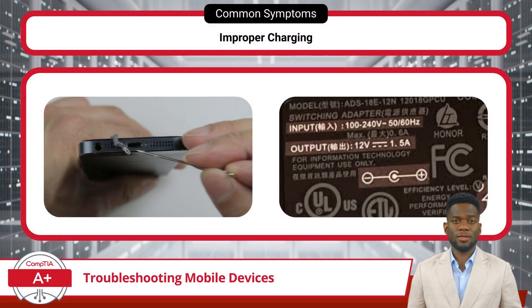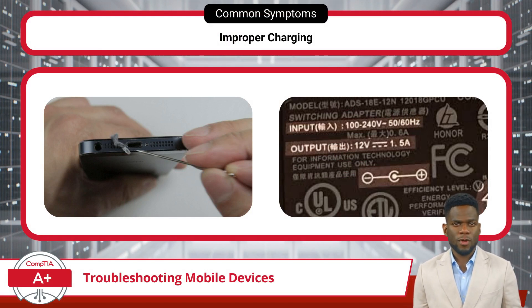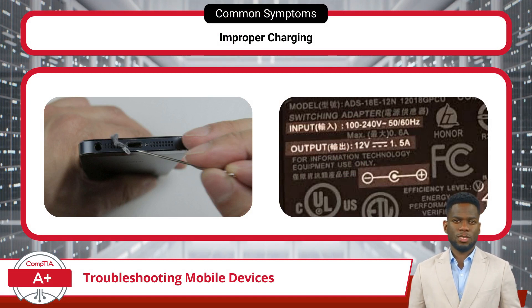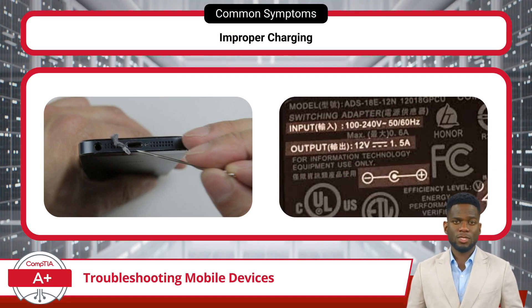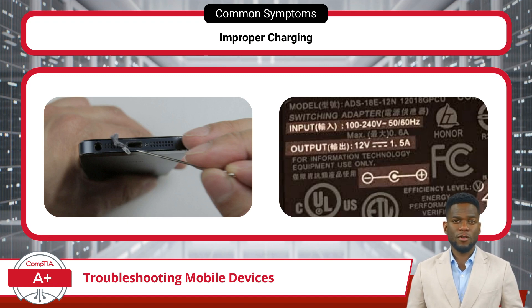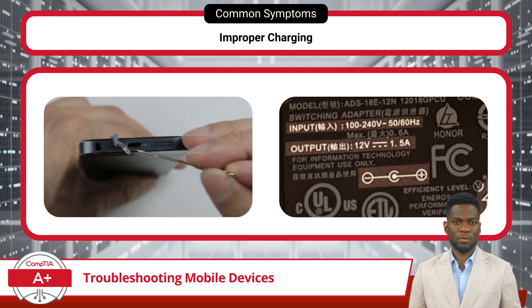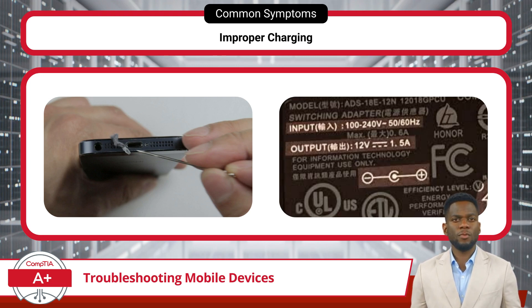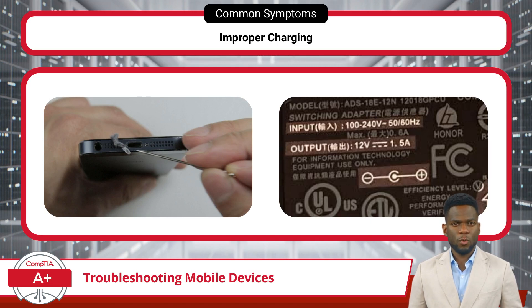In the modern era, mobile devices have evolved from mere communication tools to essential companions in our daily lives, aiding us in everything from work to entertainment. However, despite their sophistication, these devices are not immune to issues that can disrupt their functionality. Understanding common problems and knowing how to troubleshoot them is crucial for users. Let's explore some prevalent issues, starting with improper charging.